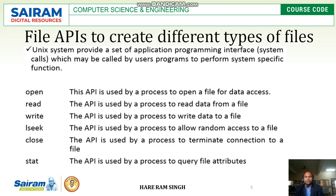The main thing we have to study is file APIs — what a file API is and how to create different types of files. Unix system provides a set of application programming interfaces called system calls, which may be called by user programs to perform system-specific functions. File APIs or system calls are special application programs called by user programs to execute specific tasks. They can also be called system calls, or application programming interfaces.